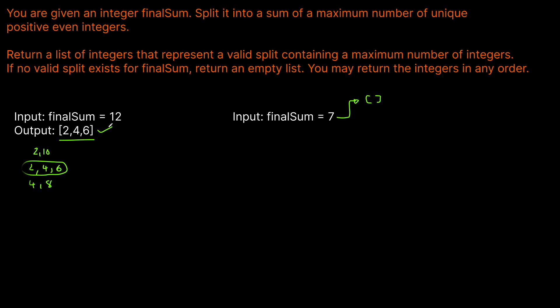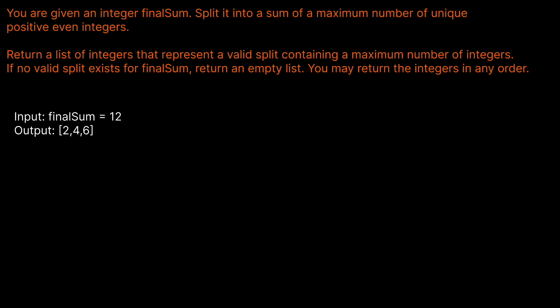Keeping that in mind, how can we build our solution? The first thing we need to do is check whether our number is even — if it's odd, we just return an empty list. If it's even, remember that we want to use the smallest numbers possible to build our result. So let's initialize our results as an empty list.